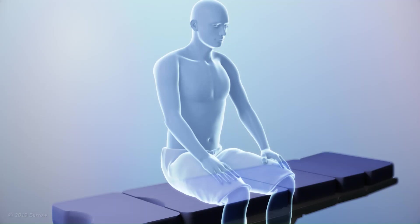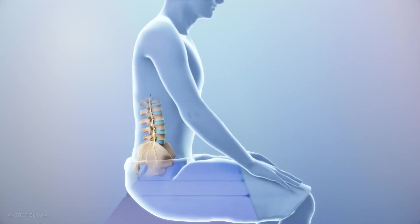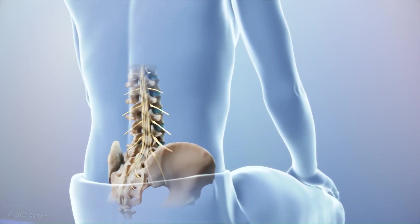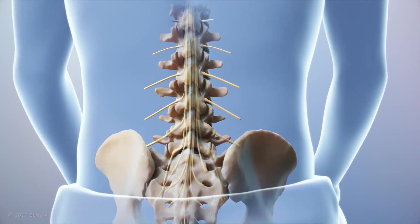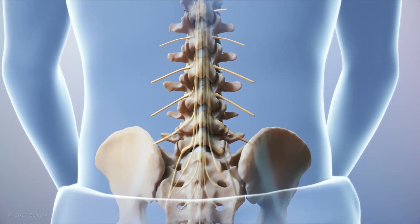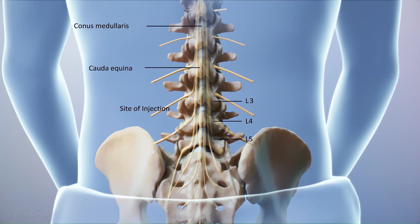Here's an animation of the lumbar puncture. It's often performed in the office setting or in the radiology suite. The patient is asked to lay on their side or maintain a seated position. The needle must avoid important neurologic structures such as the nerve roots, the cauda equina, and the end of the spinal cord called the conus medullaris. Generally, the procedure is performed at the L3-L4 lumbar space, which is well below the conus medullaris.